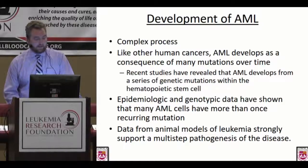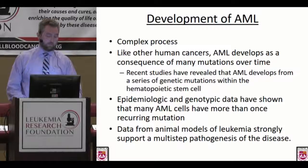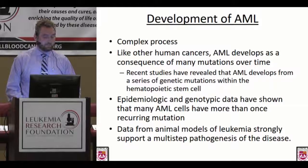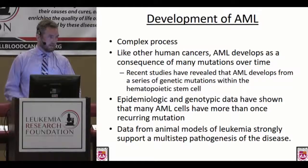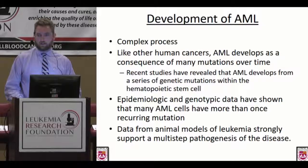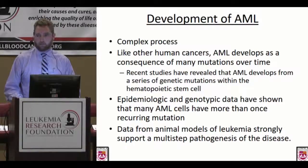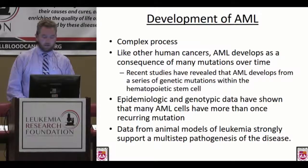The development of AML is a complex process. Like I mentioned, it really develops over time through a series of mutations. From epidemiological and natural history studies we've found that there are recurrent genomic mutations in the landscape that are consistent and lead to development of disease, but it's not any one mutation that occurs at one time — this is a pretty dynamic process occurring over a prolonged period.